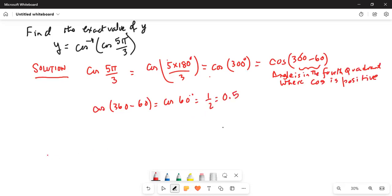So our problem boils down to y is equal to cosine inverse of half. That means cosine of y is equal to half.